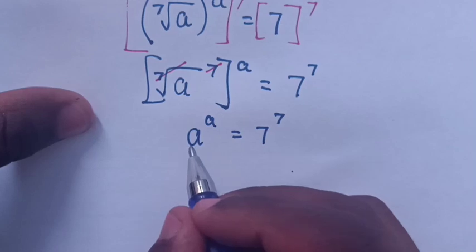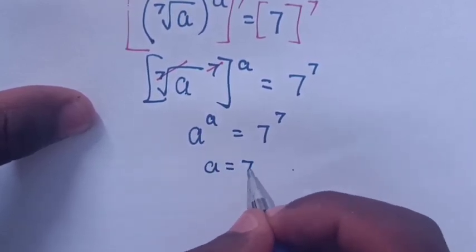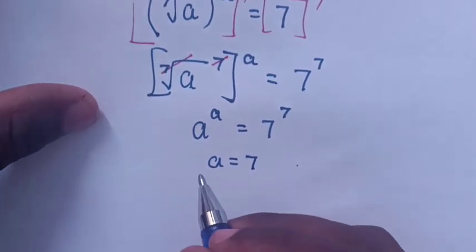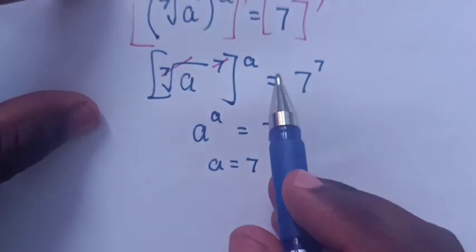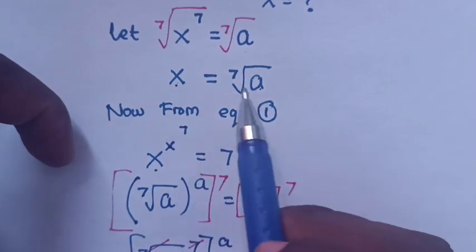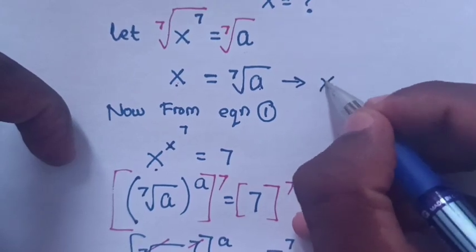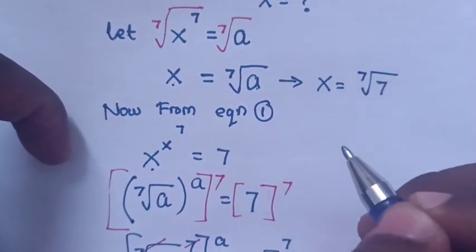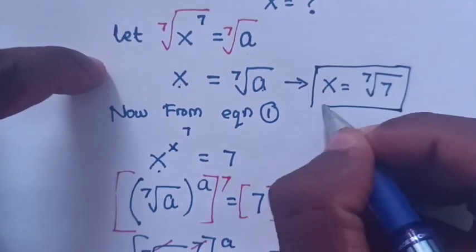Now we compare a and 7. So a is equal to 7. If a is equal to 7, we substitute the value of a into x. When we substitute the value of a, x will be equal to the 7th root of 7, which is the value of x we are asked to find.